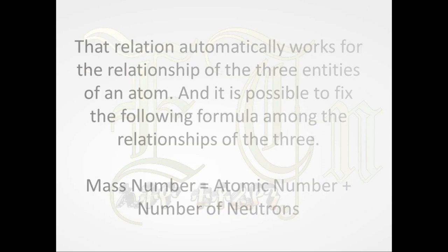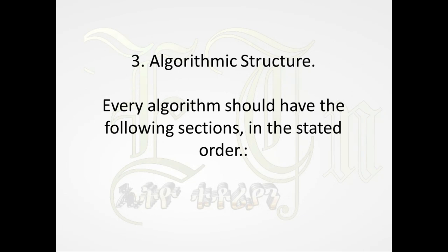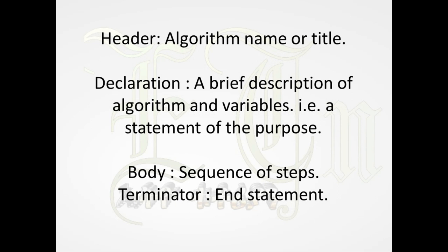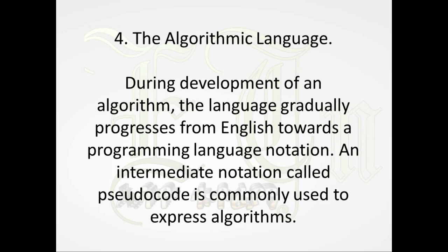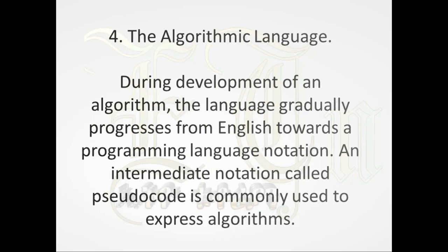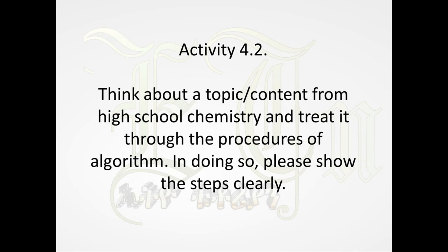That relation automatically works for the relationship of the three entities of an atom, and it is possible to fix the following formula: mass number equals atomic number plus number of neutrons. Every algorithm should have the following sections in stated order: header (algorithm name or title), declaration (a brief description of algorithm and variables), body (sequence of steps), and terminator (end statement). An intermediate notation called pseudocode is commonly used to express algorithms as the language progresses from English toward a programming language.